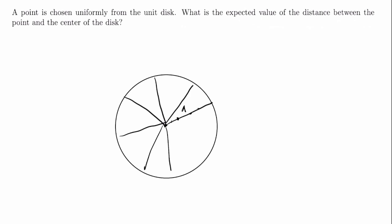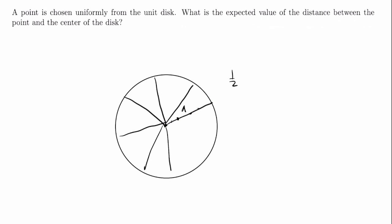Since the expected value of the uniform distribution is 1/2, we would get that the expected distance from the center would be 1/2. However, this is wrong. This is not the way to choose a point uniformly at random from the unit disk, because these radii should have a little bit of width, and they should be wider at the end than at the beginning — since a circle drawn in the middle will be a lot shorter than one drawn further out. So we can't really use this sampling procedure to sample a point uniformly at random from the disk.